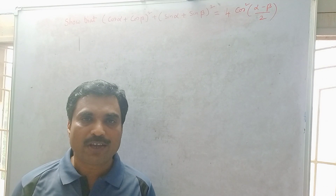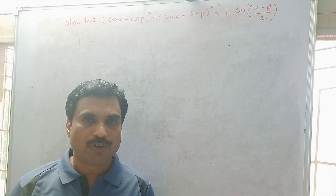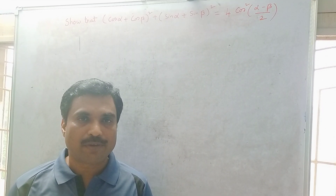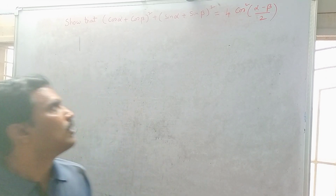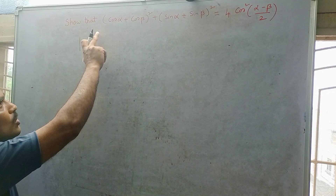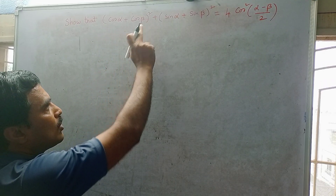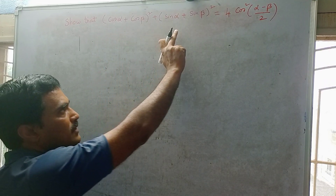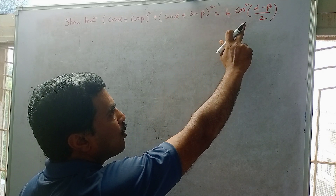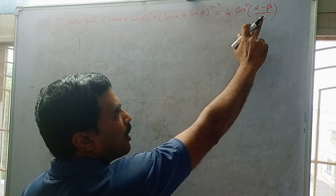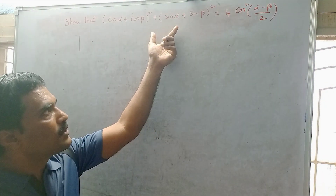Hi, welcome to my channel Yanam Kachasila. In this new video I am going to solve a mathematical problem under trigonometry. The problem is: show that (cos α + cos β)² + (sin α + sin β)² equals 4 cos²((α − β)/2).